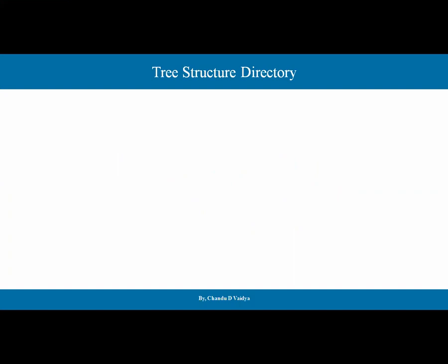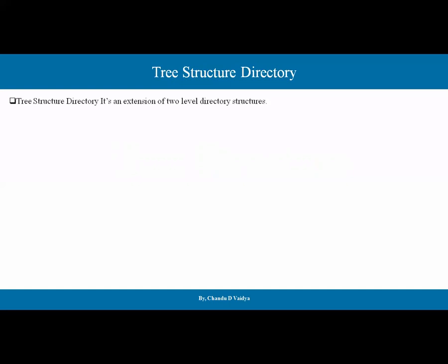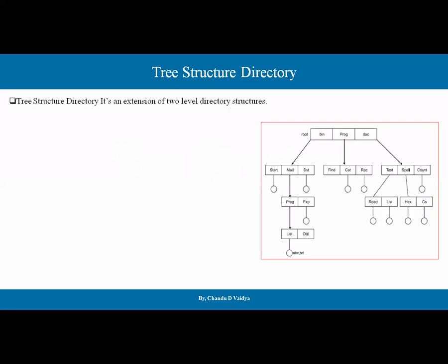The tree structure directory is an extension of the two-level directory structure. In the two-level directory structure, we had the master directory and sub-directories at the user level. If we look at this diagram, we have a root folder or root directory, and inside that root directory there are other sub-directories. Under those sub-directories, there are further sub-directories and files — this is the tree-level structure.